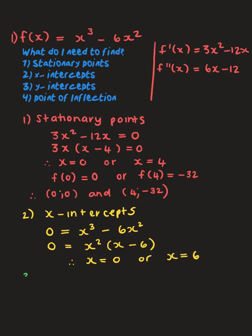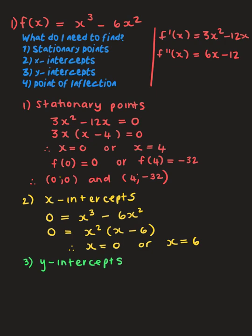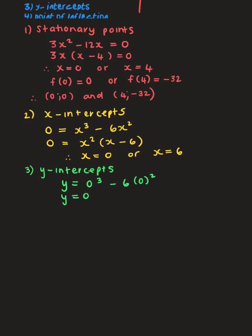For the y-intercept, we let x = 0. In the cubic form ax³ + bx² + cx + d, the constant d is always the y-intercept. Substituting x = 0 into x³ - 6x² gives y = 0. So the y-intercept is at the origin.